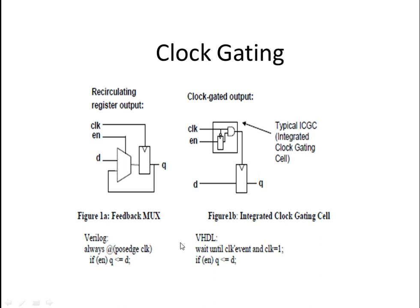So, see this. This is the clock. We are not giving this clock directly. When enable and clock are ANDed together — when the negative edge of the clock is coming, enable will come here to the AND gate. Whatever clock is there will be passed through. We will get the gated clock at the output, so D will be transferred to Q. The clock is not directly given but through this gating logic. That's why it is called clock gated.